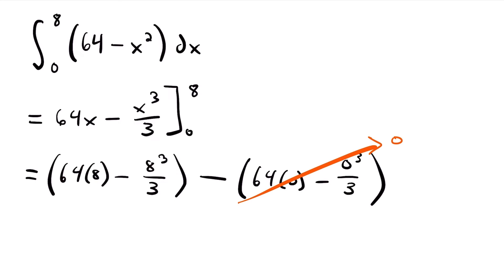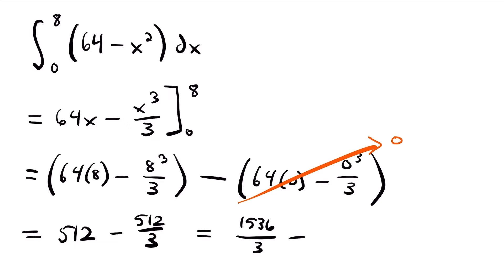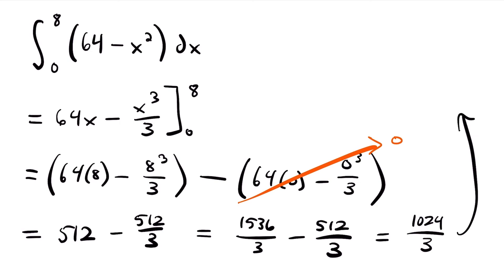Simplifying the remaining terms: 64 times 8 is 512, and we subtract 8 cubed divided by 3. 8 cubed is also 512, so we subtract 512 over 3. Rewriting 512 in terms of thirds: 512 equals 1536 over 3. So we have 1536 over 3 minus 512 over 3, and subtracting the numerators gives 1024 over 3. Plugging that into a calculator gives 341.3 repeating.